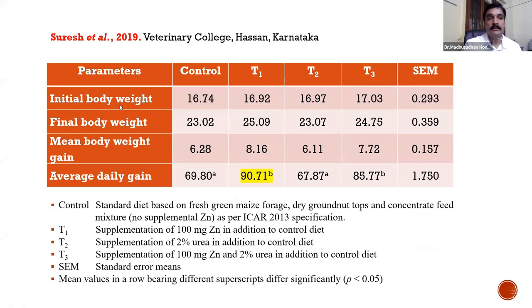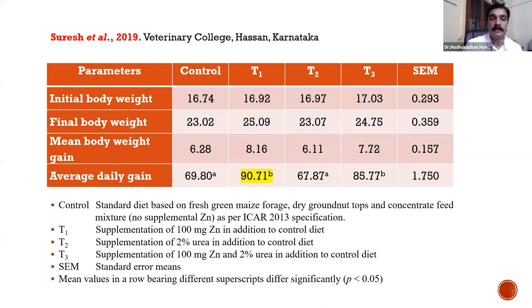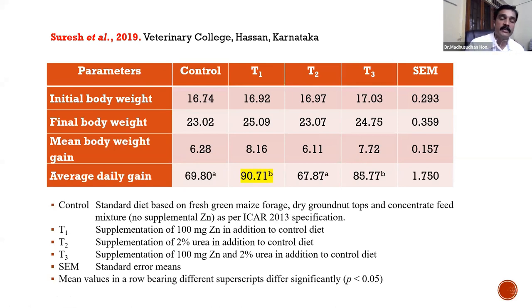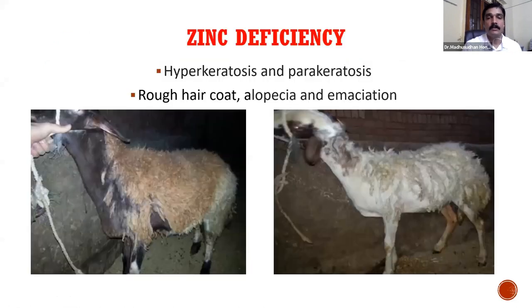In 2019, Suresh et al. conducted a zinc supplementation trial in goats. The control group received only the ICAR recommended zinc level of 40 ppm. T1 received 100 ppm zinc, T2 received 2 percent urea, and T3 received both zinc and urea. Satisfactory results were achieved only in T1, with an average daily gain of 90 grams per day, significantly different from the control. The overall conclusion is that additional supplementation of 100 ppm of zinc gives good results in goats.